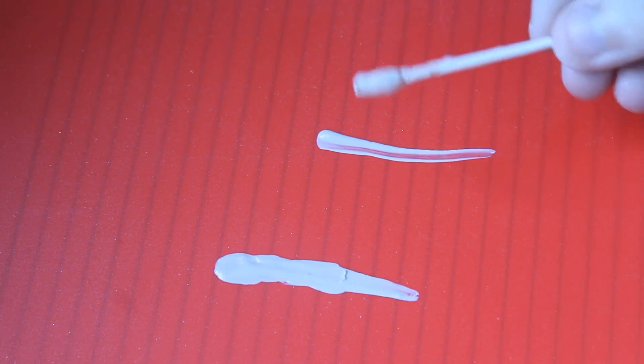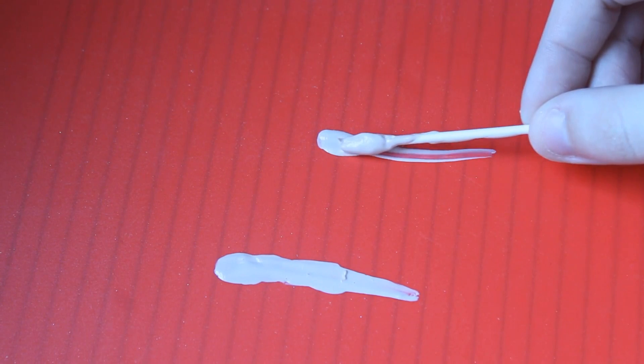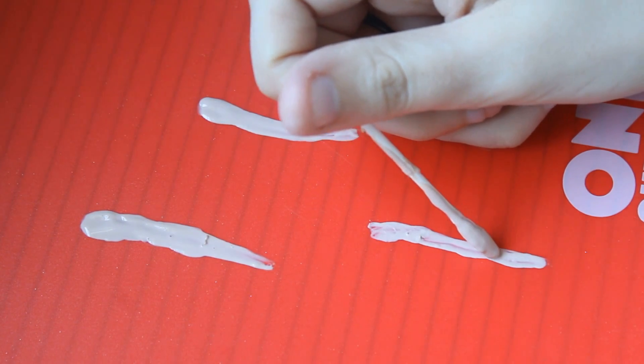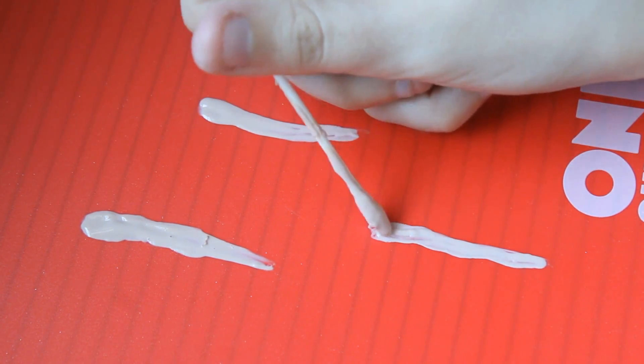First you start by creating the flappy skin, which is going to be the hangnail rip part. I'm taking a little bit of liquid latex on a Q-tip and creating a nice line on a sheet protector.